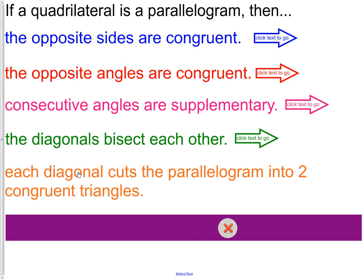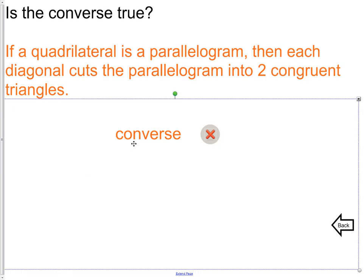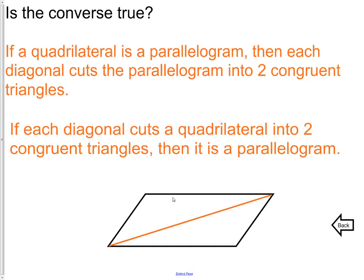Each diagonal cuts the parallelogram into two congruent triangles — this is also a true statement for the converse. If a diagonal cuts a quadrilateral into two congruent triangles, then it is a parallelogram. If triangle A is congruent to triangle B, then these two sides have to be congruent and these two sides have to be congruent. We have the reflexive side, so we have opposite sides congruent, which we know does indeed make a parallelogram.